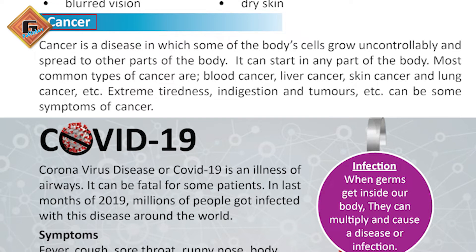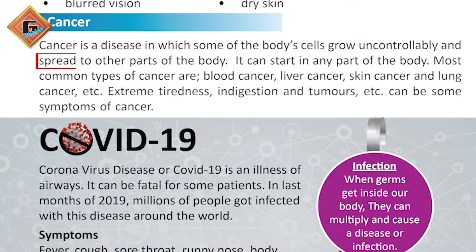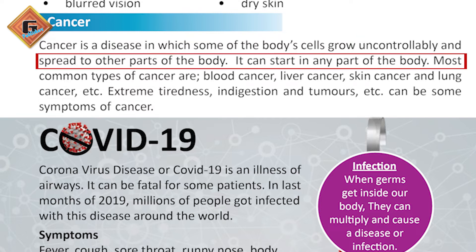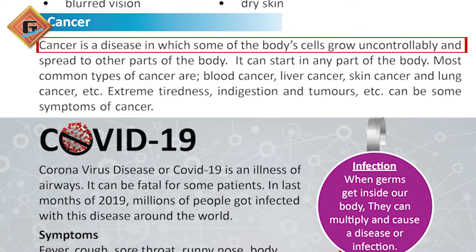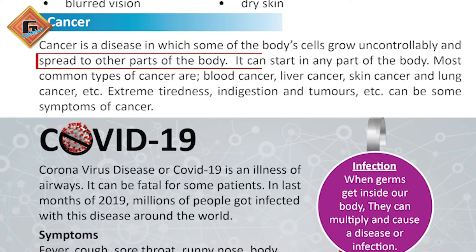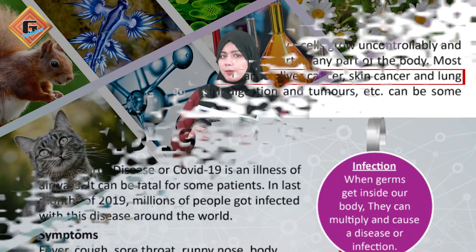Cancer is a very dangerous disease. It involves abnormal growth of the body's cells. It is a disease where cells spread and it can start in any part of the body. The most common cancers are blood cancer, liver cancer, skin cancer, lungs cancer, etc.